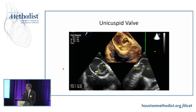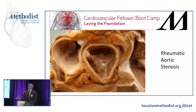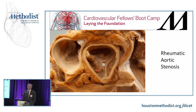Unicuspid aortic valves are very rare, but we do see them — with one raphae and a single orifice. Rheumatic disease can also affect the aortic valve. Unlike mitral rheumatic disease, the pathology proceeds from the commissures inward, leaving a triangular-shaped orifice. Echocardiographically, there is enough calcium that it is difficult to distinguish from calcific aortic disease, and we usually rely on the history of rheumatic fever or involvement of other valves.